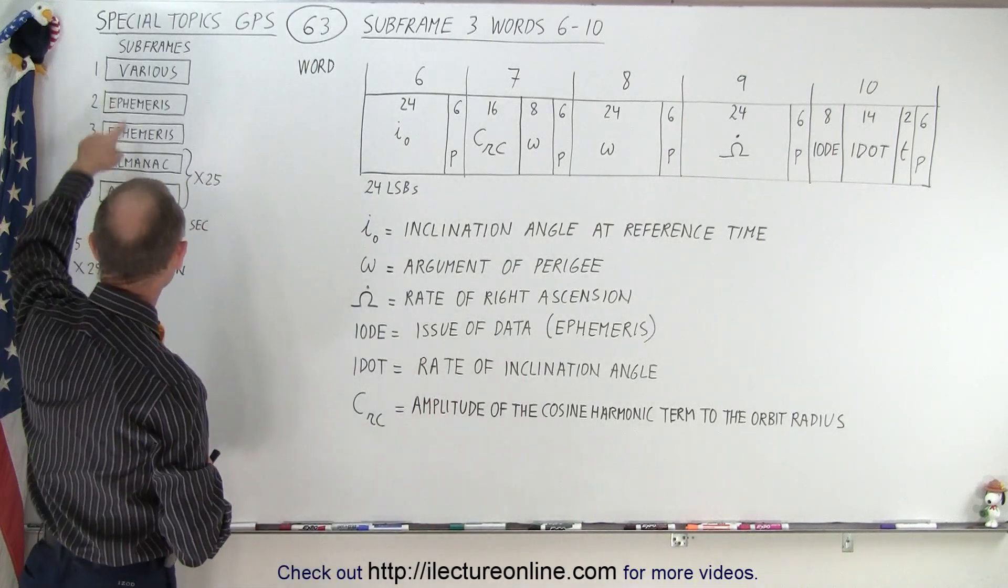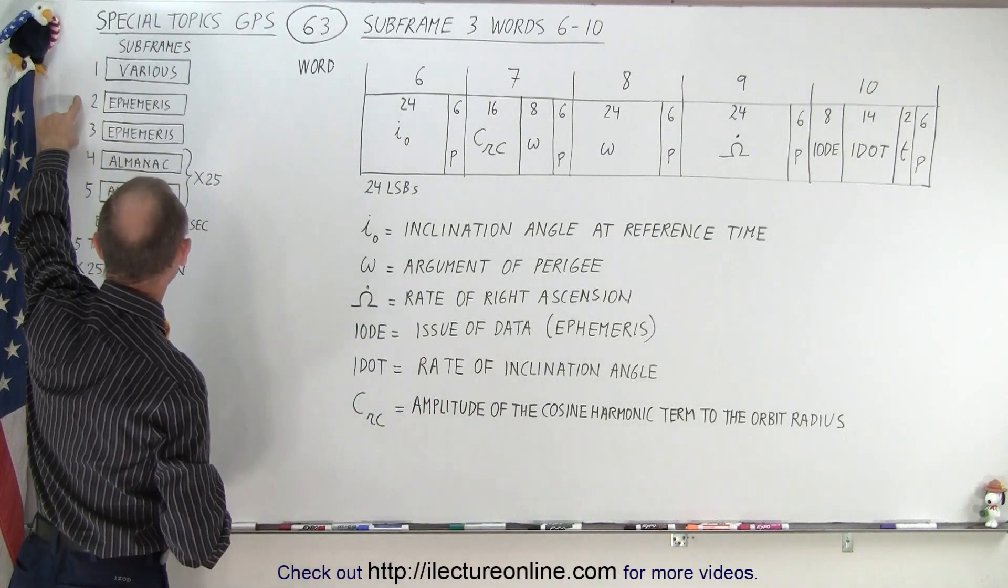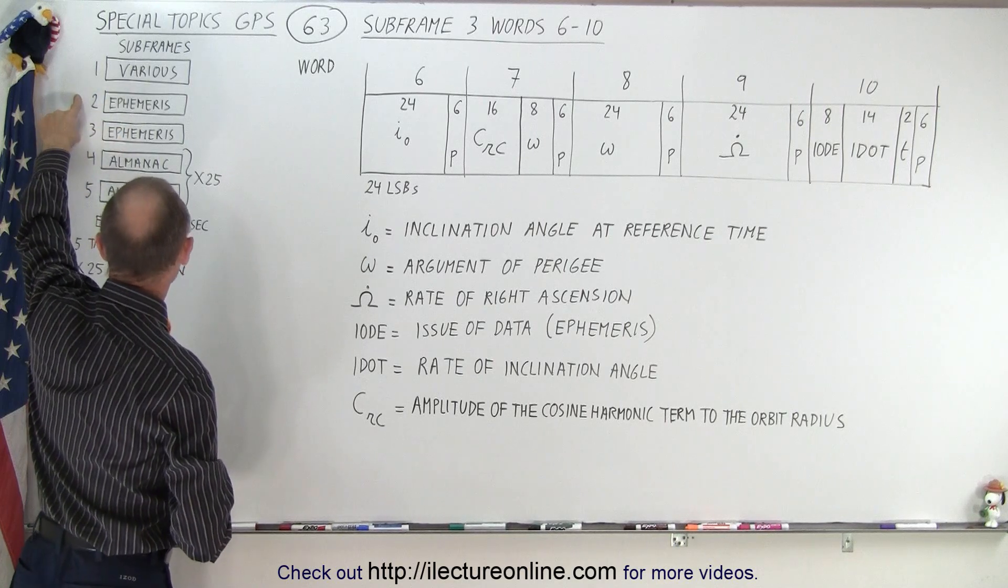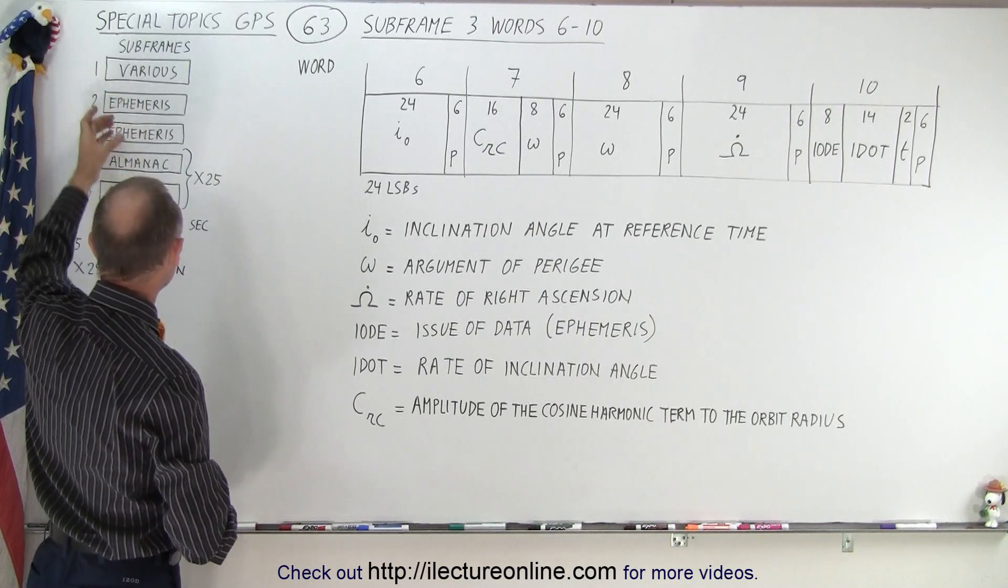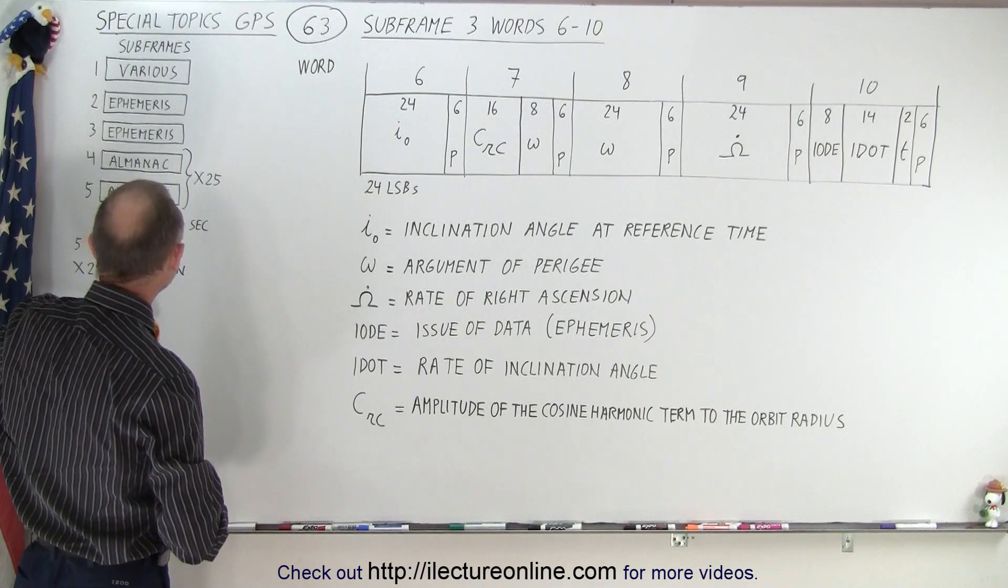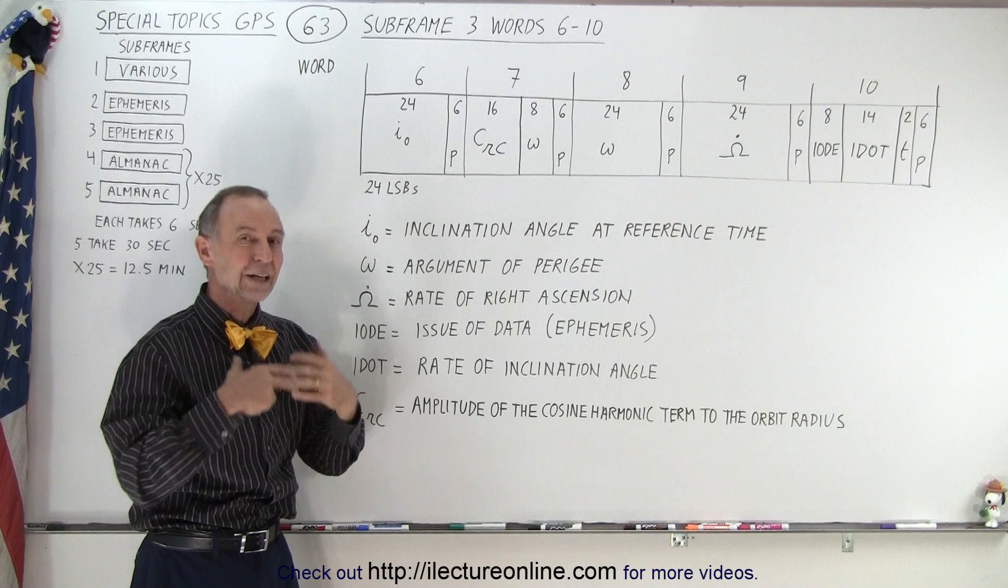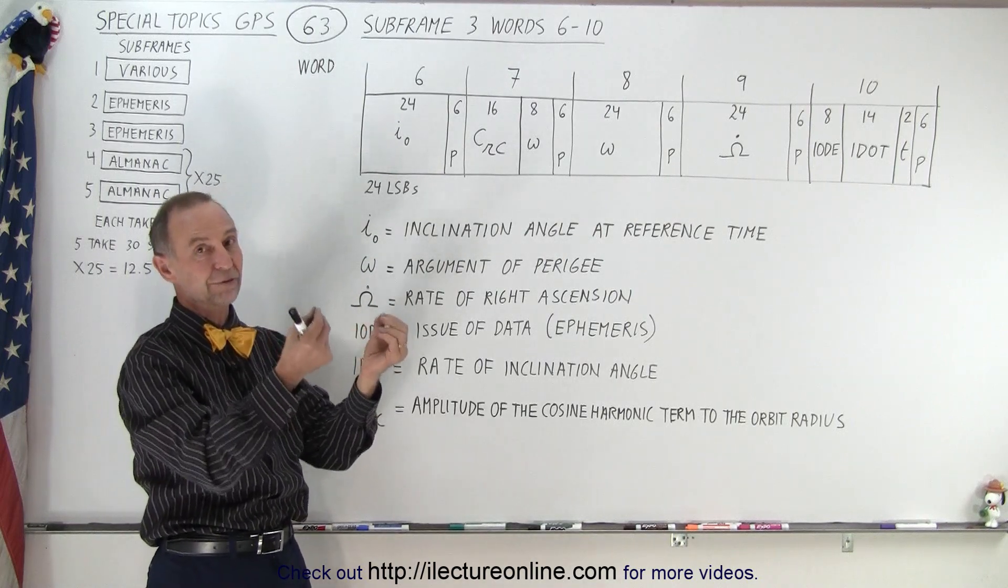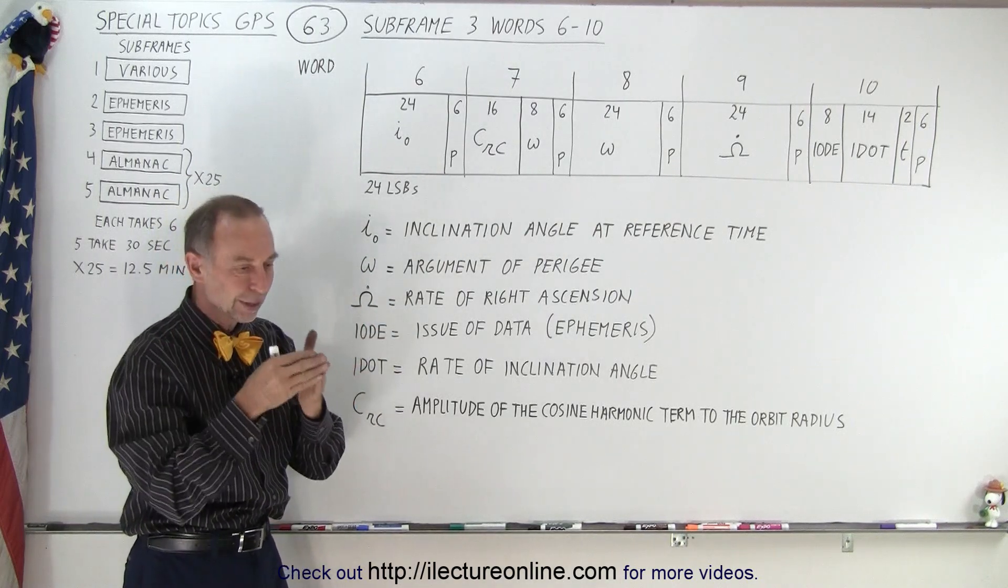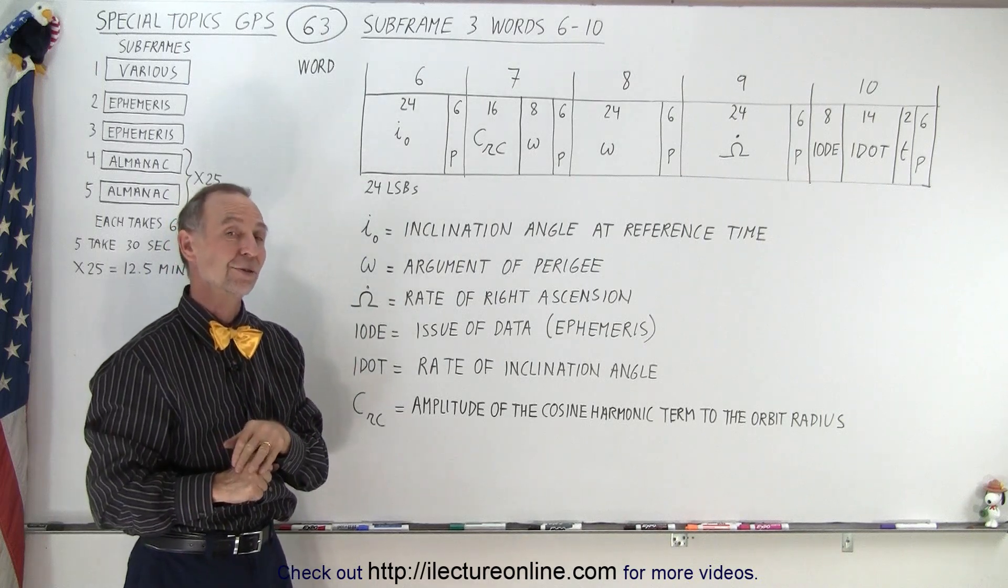So notice we have the five subframes. These are sent, they take six seconds each. So for a period of 12 seconds, every 30 seconds, we receive the ephemeris data from each satellite and that is how we can find the satellite, lock on to it and track it, knowing exactly where it is and then based upon the information of the satellites, we can know exactly where we are on the surface of the Earth.